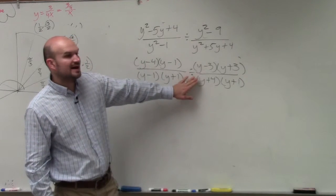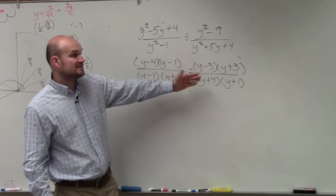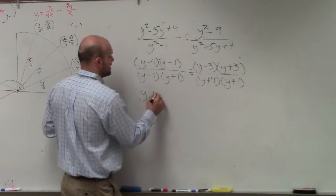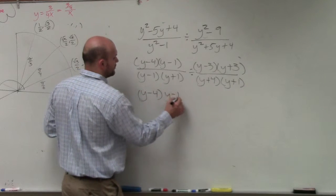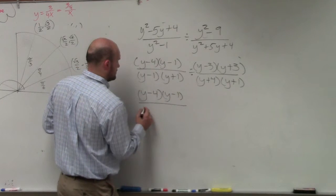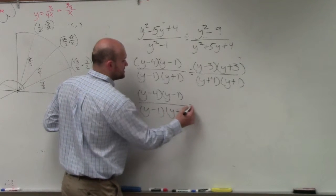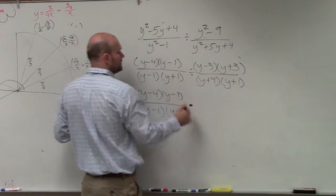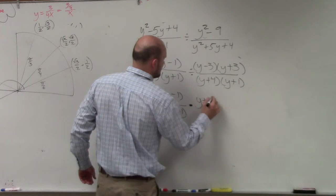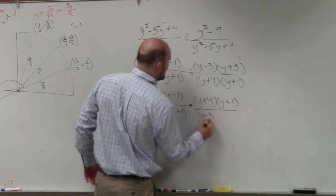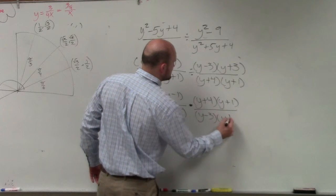So now, remember when we're dividing, that's the same thing as multiplying by the reciprocal. So I could have done that in the last step, but I'm just breaking it down for some of you to hopefully see a little bit clearer. So what I'm going to do is change this to a multiplication problem of the reciprocal. So that's (y+4) times (y+1) all over (y-3) times (y+3).